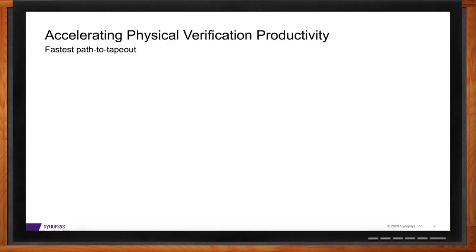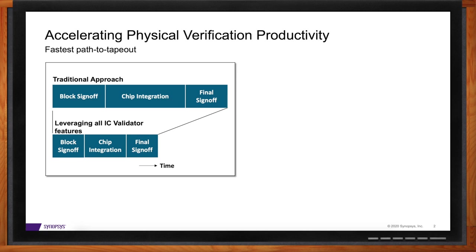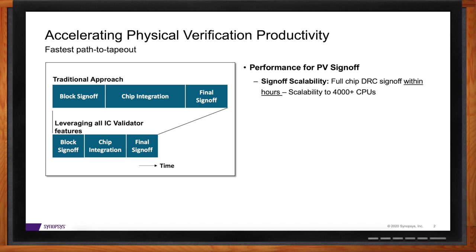We're talking about accelerating physical verification with IC Validator today. Before we get into the details, how does this compare with a more traditional approach? We talked last year about the shift left of physical verification in the overall design flow. In traditional flows, the primary focus has always been on the last sign-off runs, and performance for those sign-off runs is extremely important — the faster you can finish your sign-off run before tape-out, the better. By scaling to hundreds or even thousands of CPUs, designers can sign off within hours instead of multiple days.